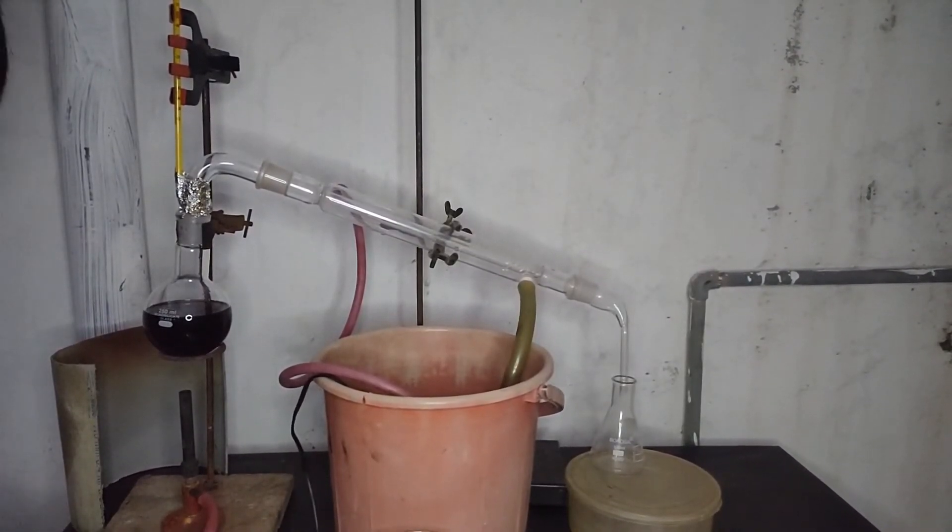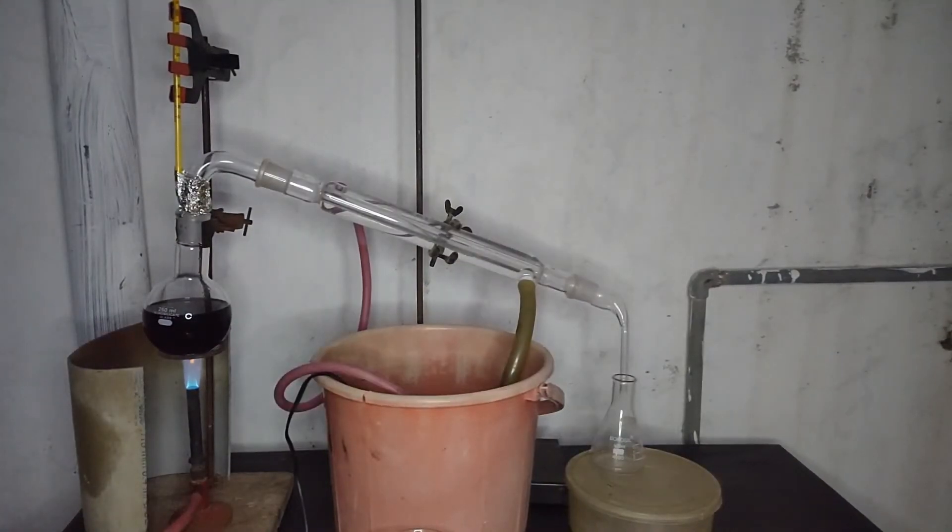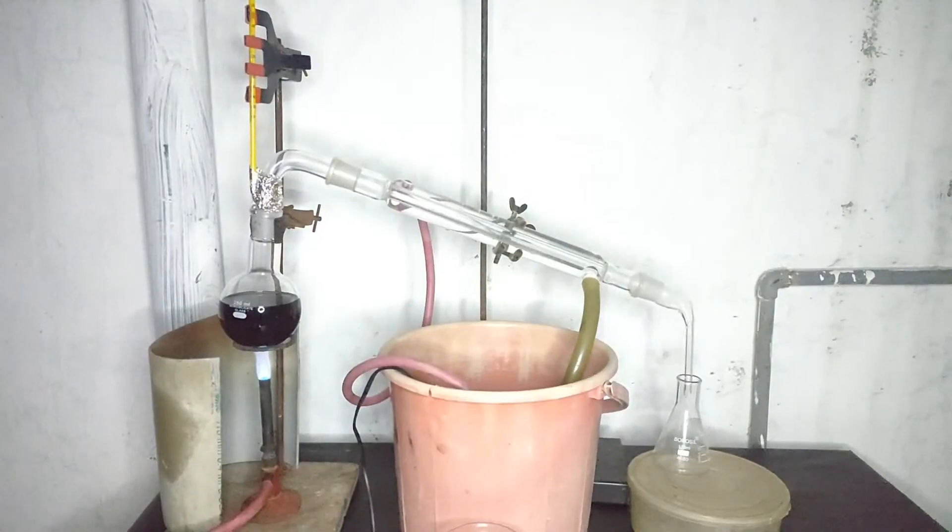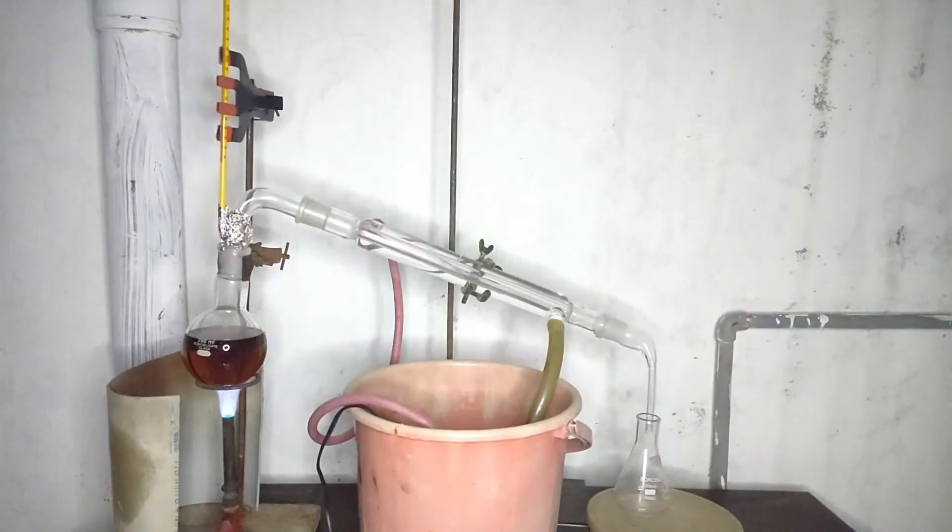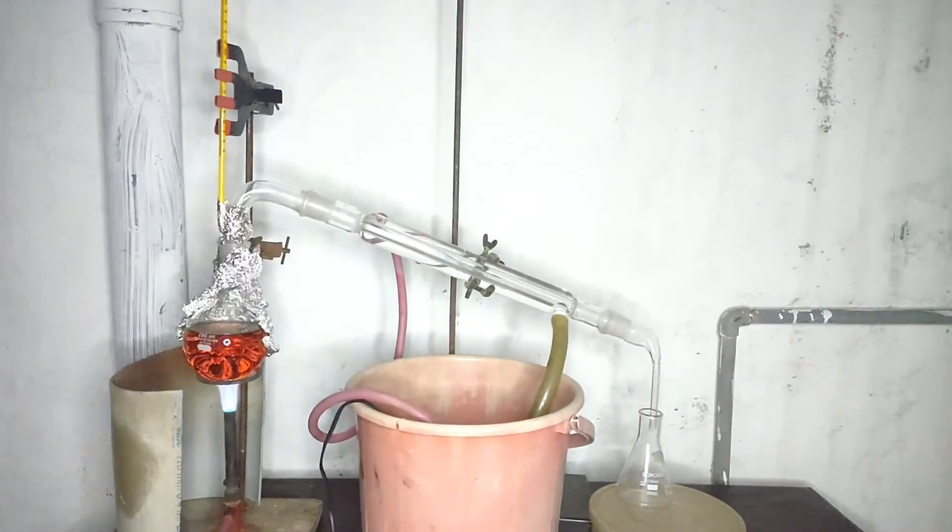Water was circulated in the condenser and burner was lit and its flame was adjusted. I insulated the flask with aluminum foil so that the vapors can make up to the top and the color of the sulfuric acid has lightened up.